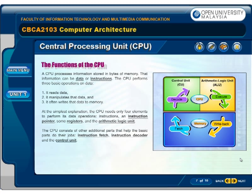The four elements the CPU needs are: instructions, an instruction pointer, some registers, and the arithmetic logic unit. The CPU also consists of additional parts that help the basic parts do their jobs: instruction fetch, instruction decoder, and the control unit.